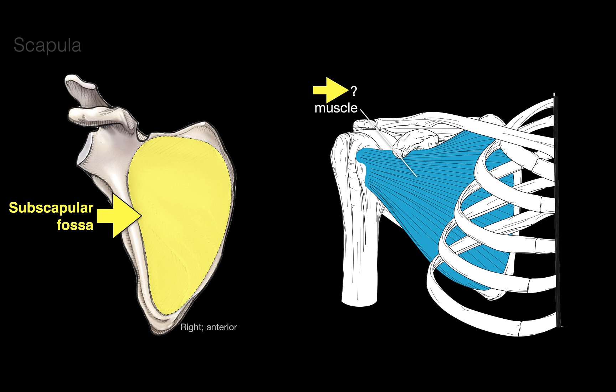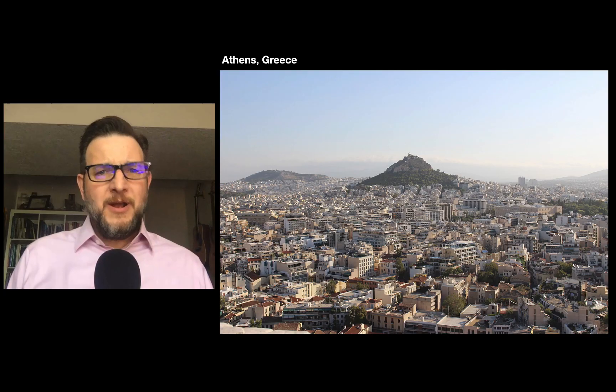Anatomists asked: what do we name this muscle that's coming from the subscapular fossa? They called it the subscapularis muscle.